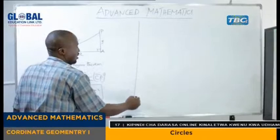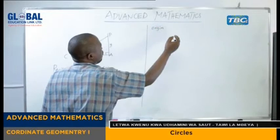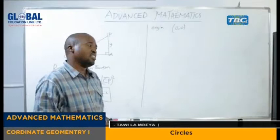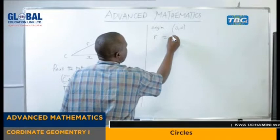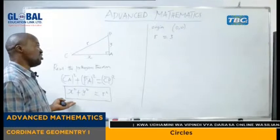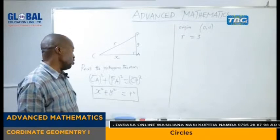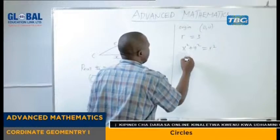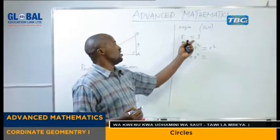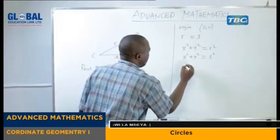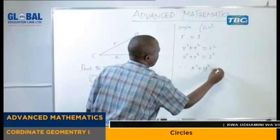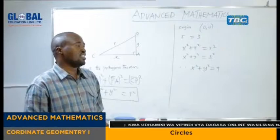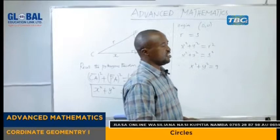In this equation we have been given the origin, that is origin — remember, origin is (0, 0). We also have the radius, that is r, is equal to three units. Remember the general equation of the circle with the center at the origin is given by x squared plus y squared is equal to r squared. So here we have x squared plus y squared is equal to — remember r is equal to 3 — so here we have 3 squared. Therefore the equation will be x squared plus y squared is equal to 9. That will be the equation of the circle whose center is at the origin and the radius is equal to three units.